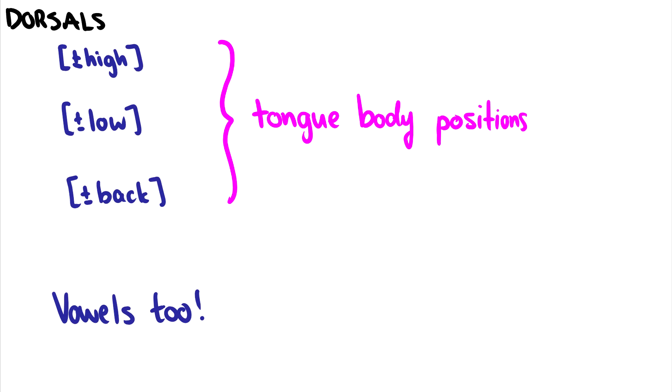Dorsals are a little bit more complicated. And they have three features that talk about the tongue body position. And these are also very important features for vowels. So vowels are going to be labial and dorsal. But of course, dorsals, we can talk about the height of the tongue. So is it high or low? You might be saying, why do we need high and low? Well, if it's not high and not low, then it means it's central. So that's why we have both features.